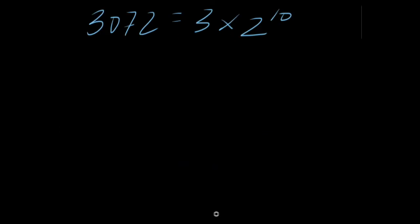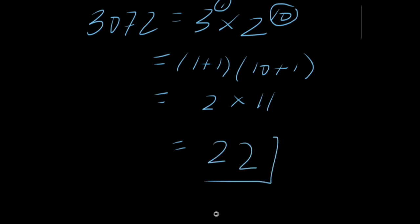So again, we just do our method one more time. So this is 3 to the first. It's the same thing as 3 times 2 to the 10th. So we do the same thing. Add 1 to all the exponents and then multiply those together. And remember, we can just disregard the bases. So our exponents are 1 and 10. So let's add 1 to each of those. 1 plus 1 times 10 plus 1 is equal to 2 times 11 is equal to 22. So there are 22 factors, 22 positive integer factors of 3,072.